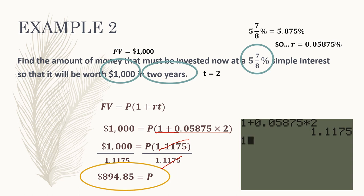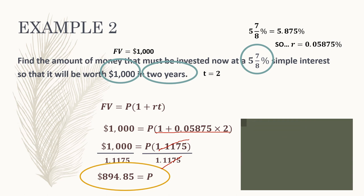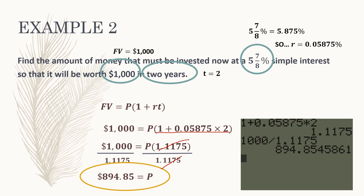In the screen recording, I first compute the parentheses: 1 plus 0.05875 times 2. Then I divide 1000 by the result — 1.1175 — to get my answer, rounded to two decimal places.